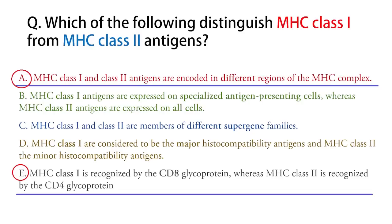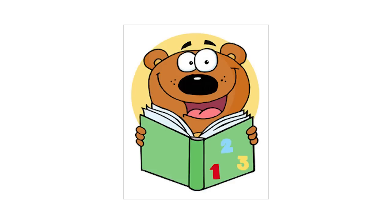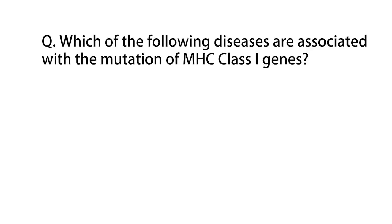As we can see, except option A and option E, all the other options are not correct for the given question. Now let's come to the last question: which of the following diseases are associated with the mutation of MHC class one genes?